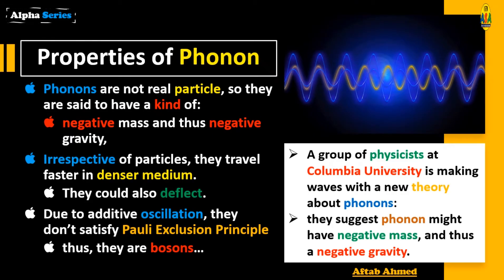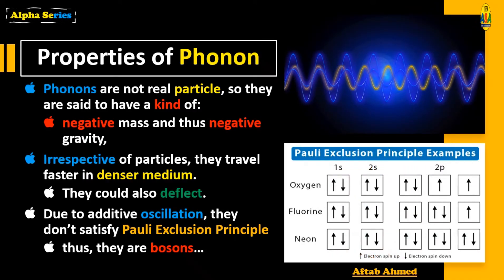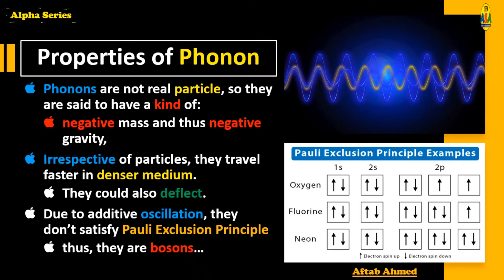Therefore, phonons are bosons. Bosons are particles or particle-like things which satisfy Bose-Einstein statistics. Some other examples of the Pauli exclusion principle are shown for oxygen, fluorine, and neon, where 1s, 2s, and 2p shells are explained.